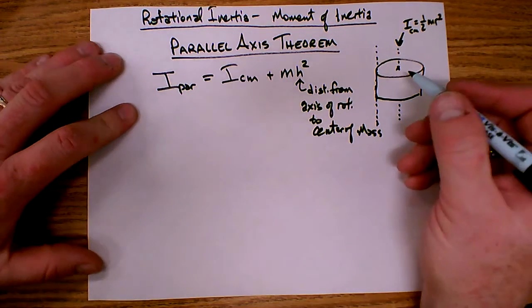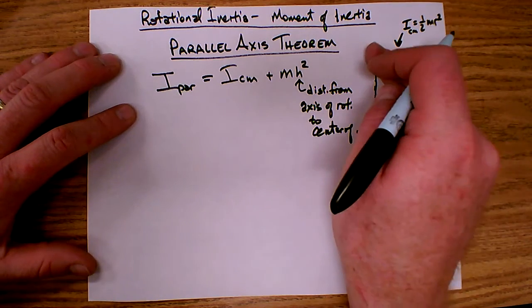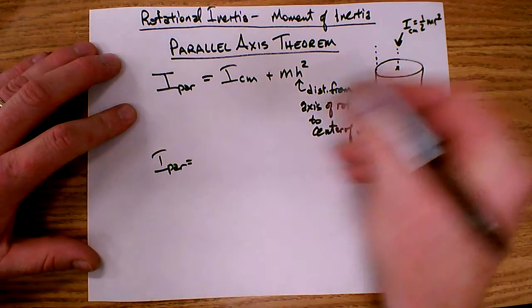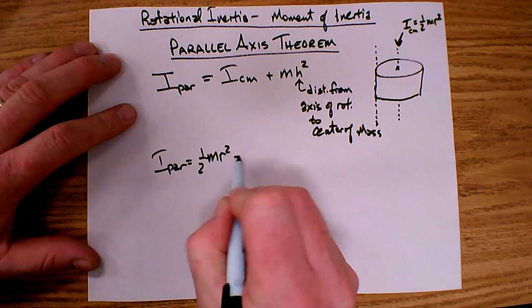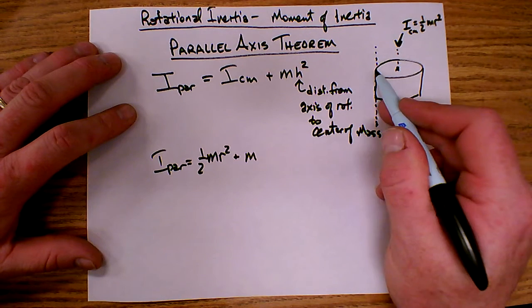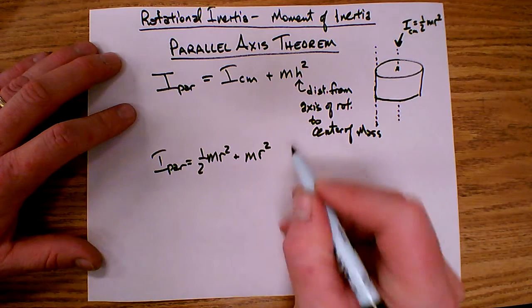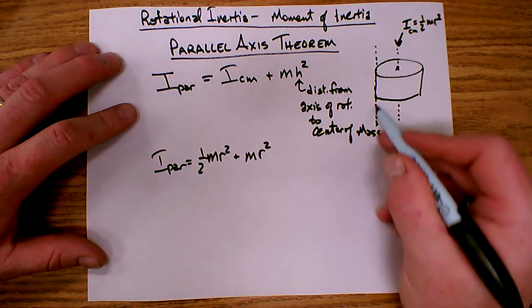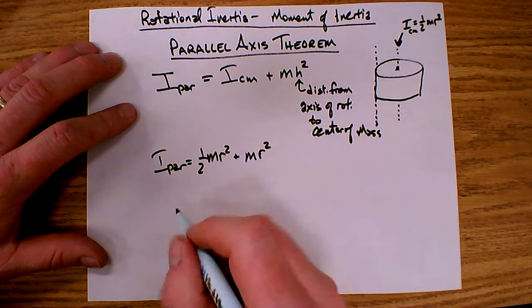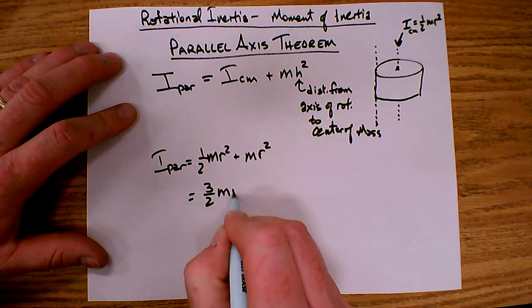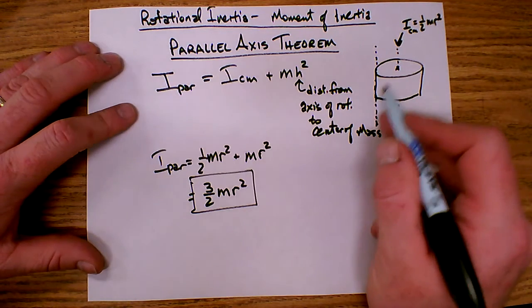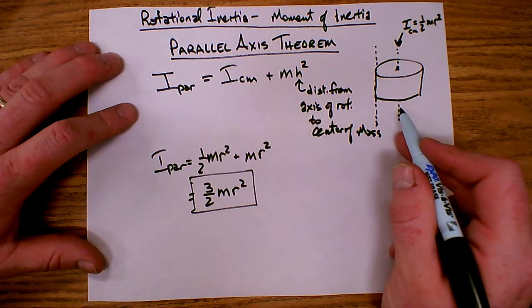Let's take a look at how this works for the cylinder. If the parallel axis is on the edge of the cylinder, then I center of mass is one half m r squared plus the mass of the cylinder times h squared. In this case, h — the distance from the center of mass to this parallel axis — happens to be the radius. So the inertia for this parallel axis is one half m r squared plus m r squared, which gives three halves m r squared. This is the inertia of a cylinder for an axis tangent to an edge and parallel to the axis through the center of mass.